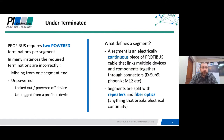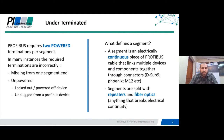A segment is an electrically continuous piece of Profibus cable that links multiple devices and components together through connectors. Segments are split with the use of repeaters and fiber optics. A given Profibus network would consist of multiple different segments because you have about 125 device addresses in a single network, and segments have limitations on total number of devices, total distance, split again with repeaters and fiber optic modules. On every single segment you must have two terminations — one at the beginning and one at the end. In many instances within industry these required terminations are either disabled or missing from either or both ends.